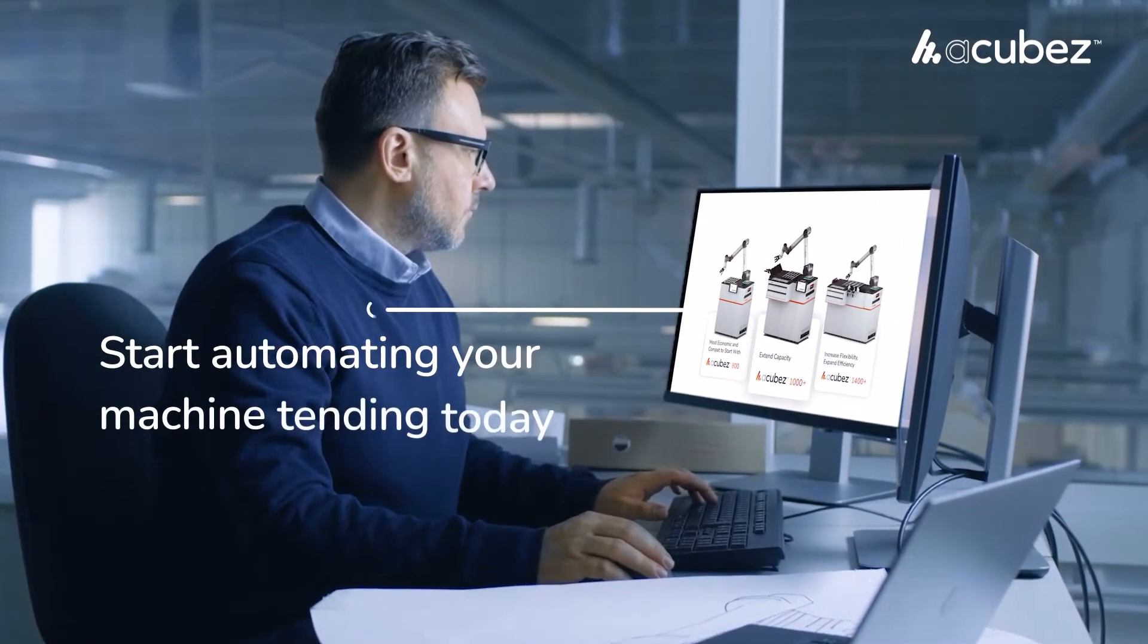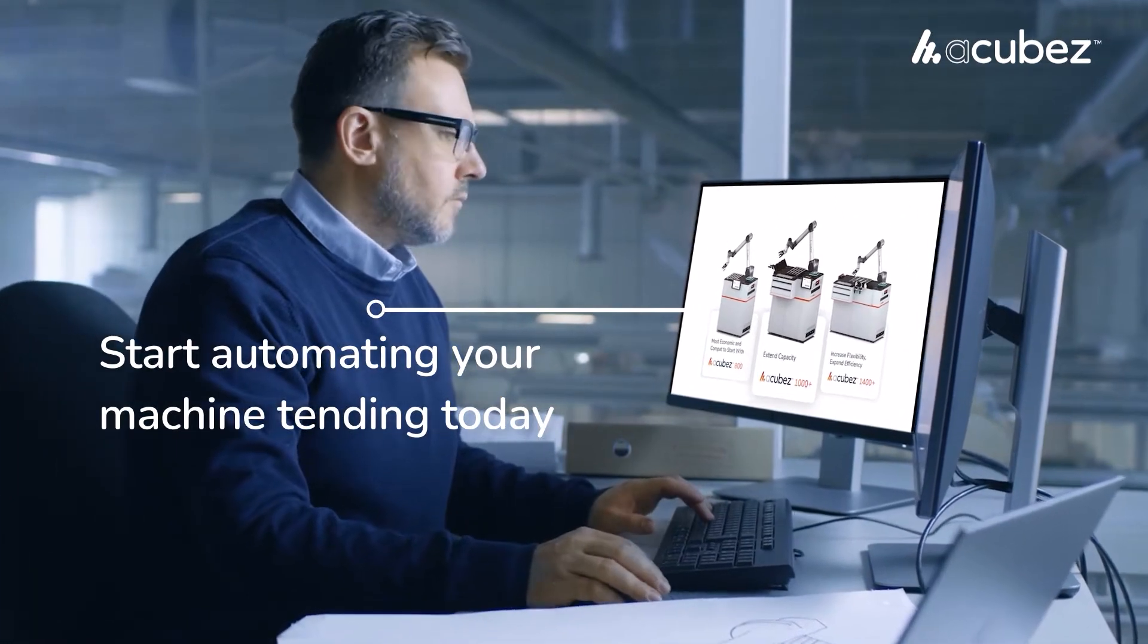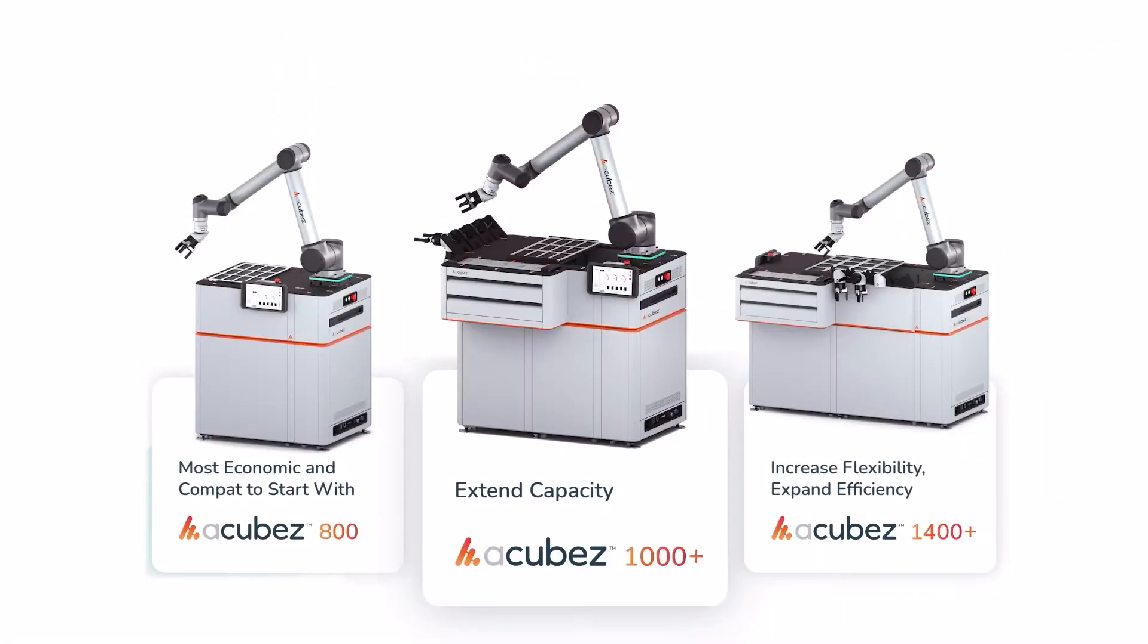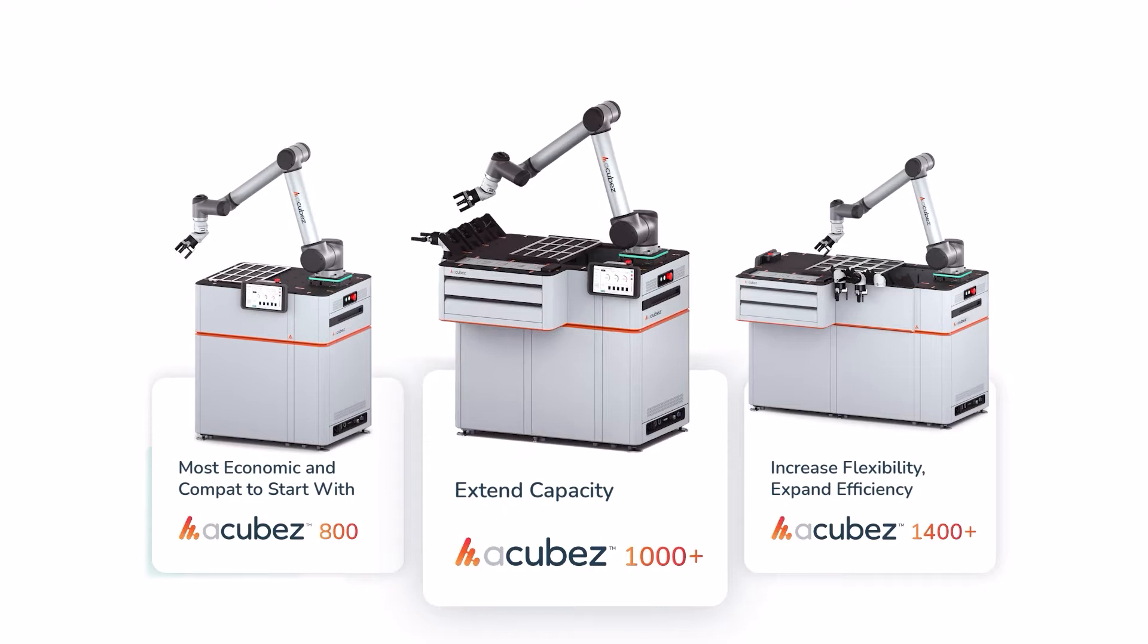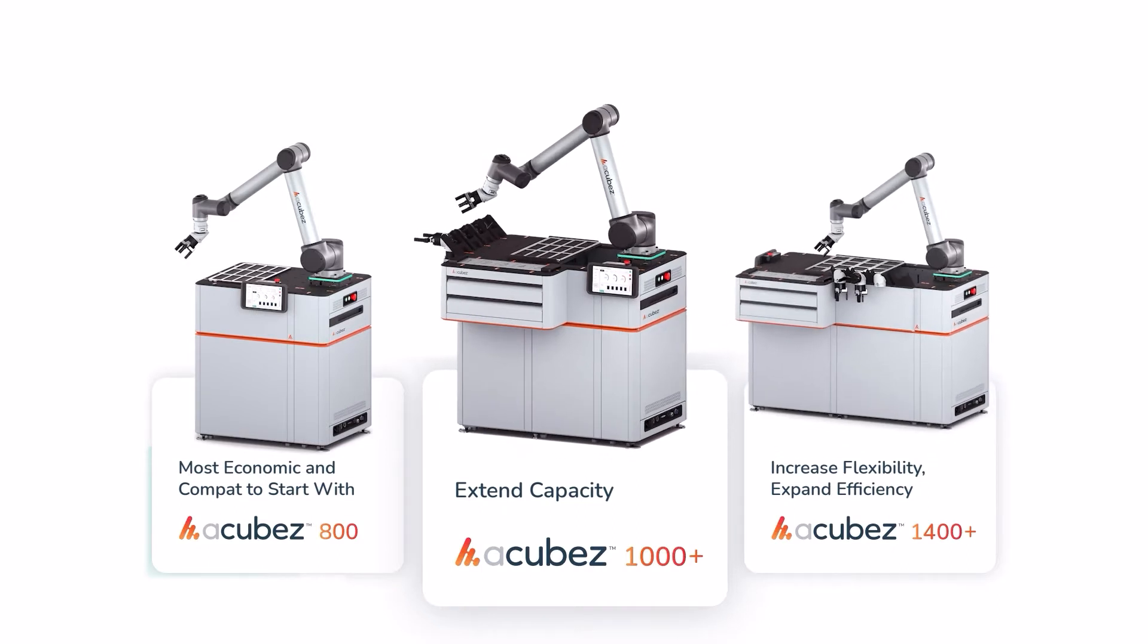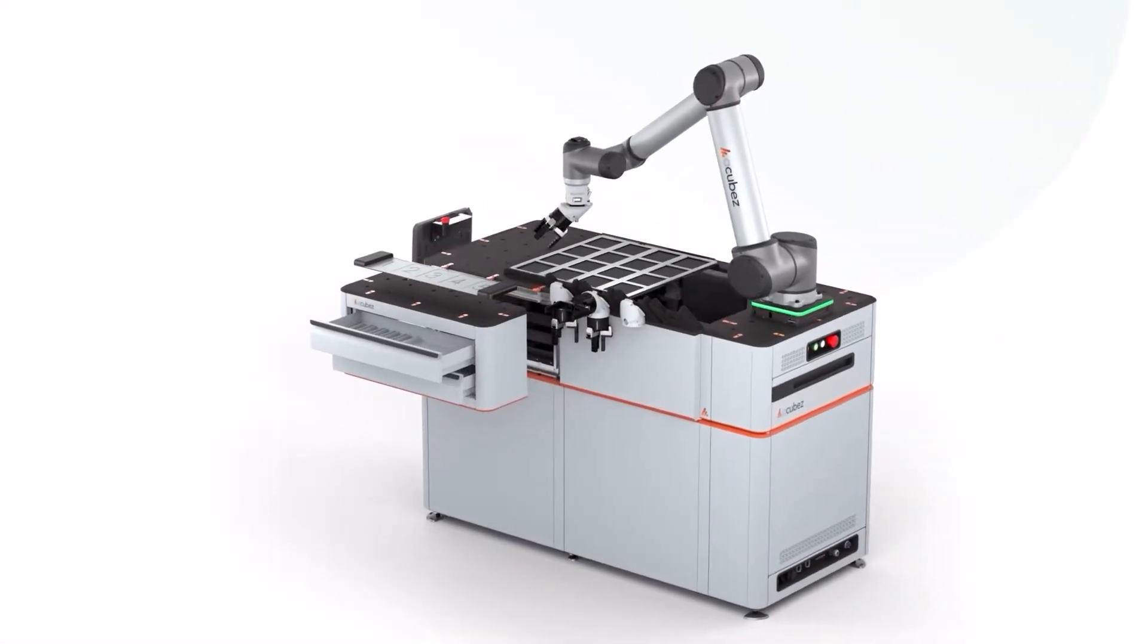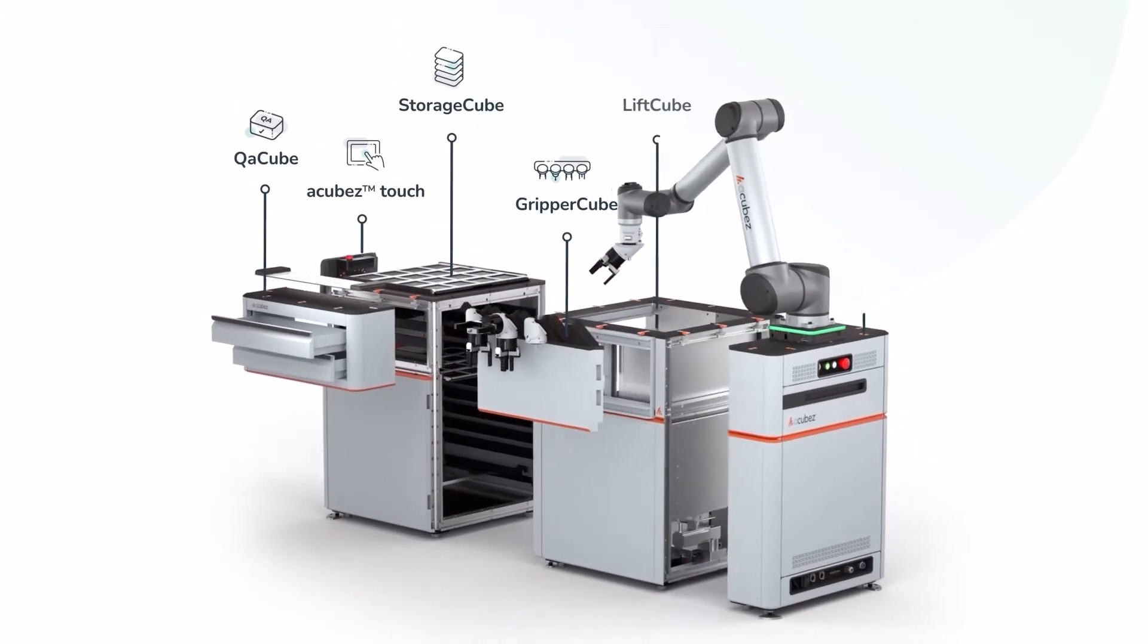Start automating your machine tending today by choosing one of the A-Cube's low-risk starter configurations: the 800, the 1000, or the 1400, and modularly scale later with our wide range of plug-and-play cubes and add-ons.